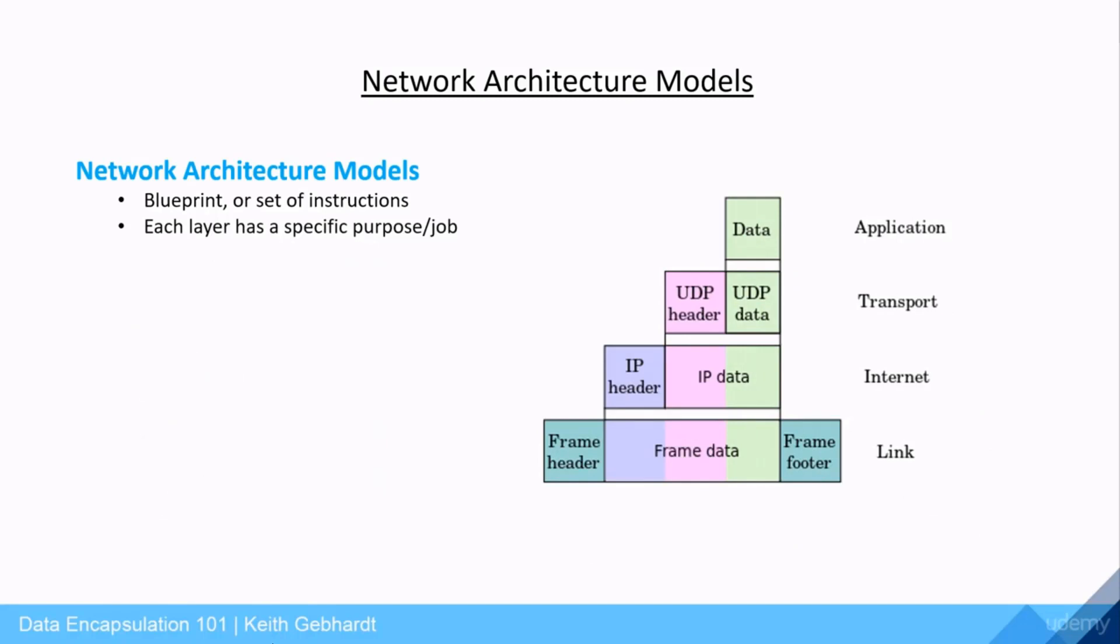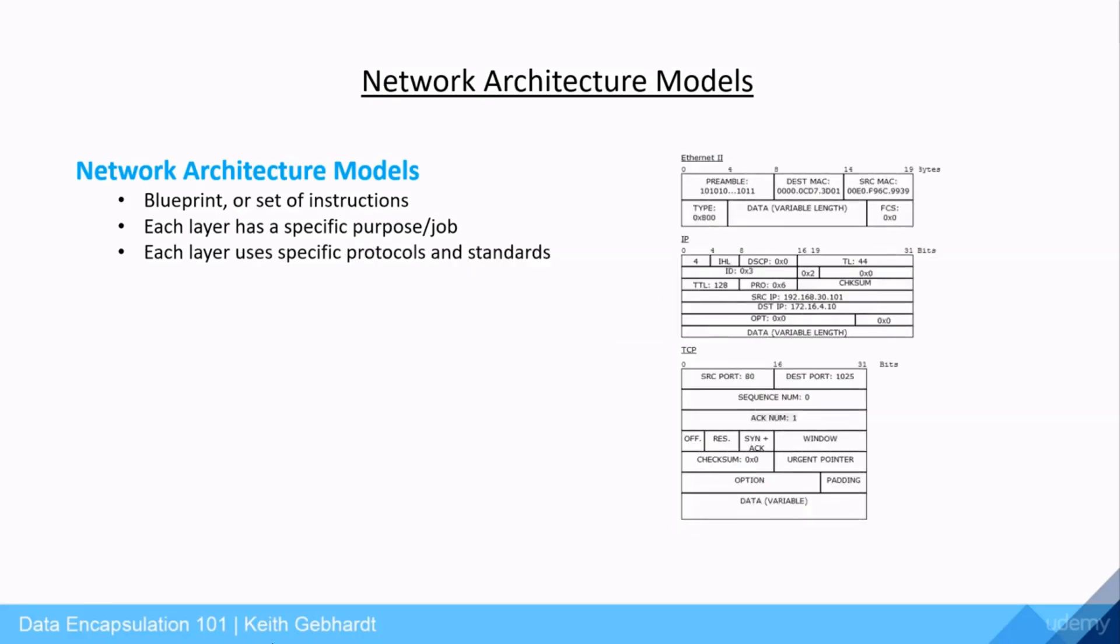Each layer of the network architecture models have a specific purpose and job to perform to make the transmission of our data across networks possible. Not only do each of the layers have a job to perform, they also use specific protocols and standards associated to each individual layer. One layer will be used for application protocols and standards, another layer for determining the connection type and what port they will use, and another layer will determine the logical addressing and physical addressing information we require to send this information across our networks.